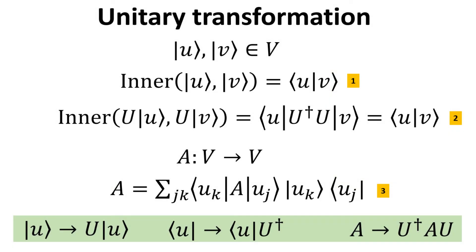In mathematics, a unitary transformation is a transformation that preserves the inner product. In other words, the inner product of two vectors before the transformation equals their inner product after the transformation. Hence, unitary transformation finds widespread application in quantum mechanics, as it preserves the normalization of the quantum state vectors. Consider U and V kets from vector space V. If these kets are operated on by the unitary operator U, one can show it has no effect on the inner product, as shown in equation 2. We say that the kets have been unitarily transformed.